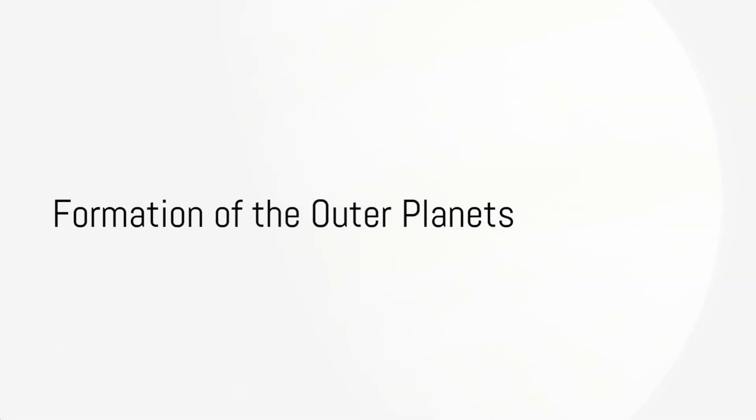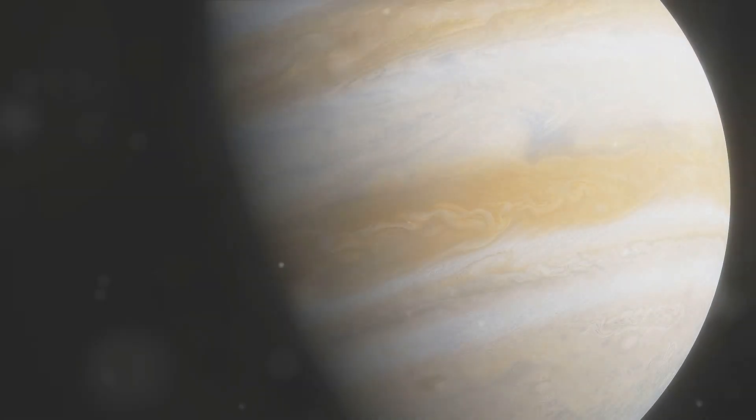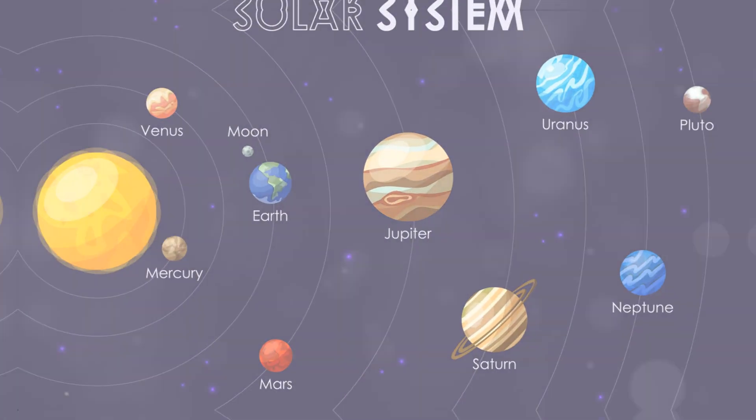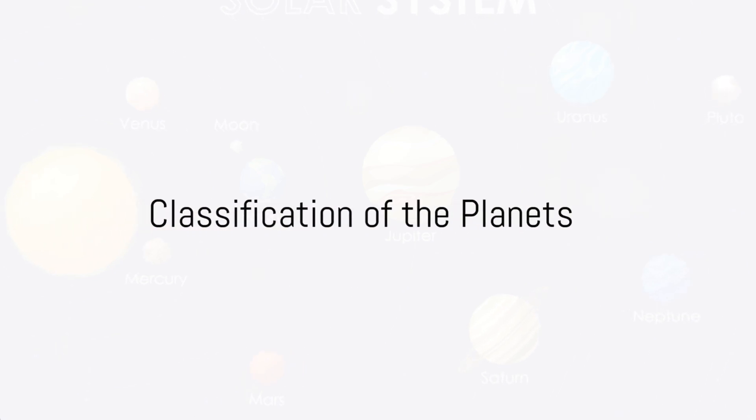The intense heat forced some of the lighter materials further away, resulting in the formation of the outer planets, the gas giants. The planets can be classified into two main categories.